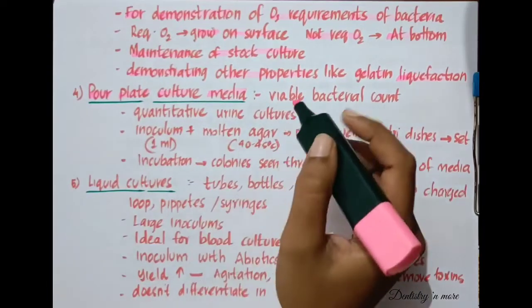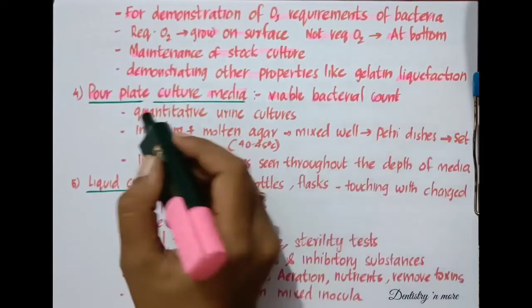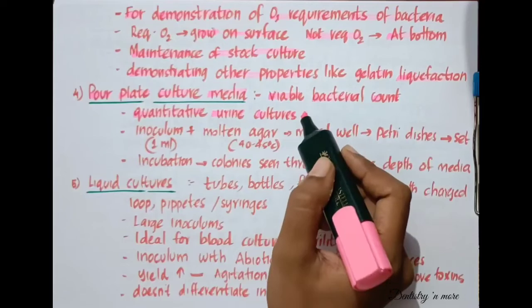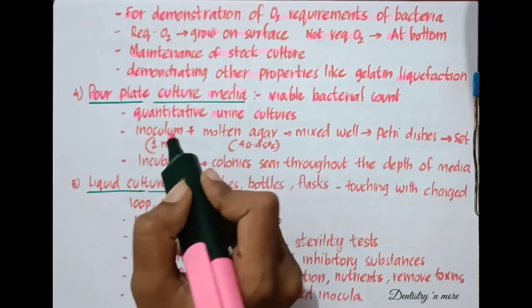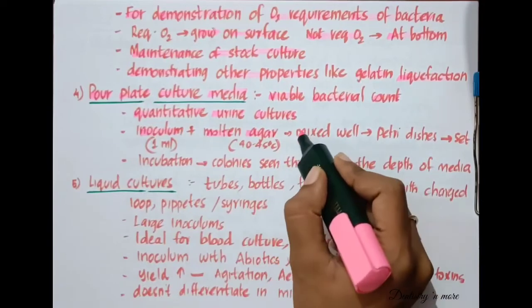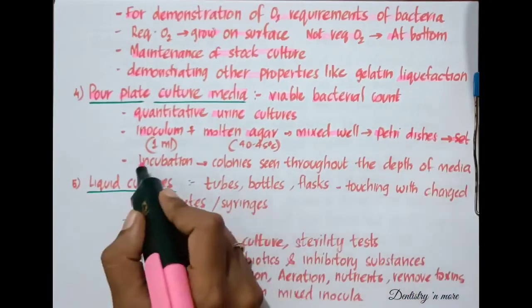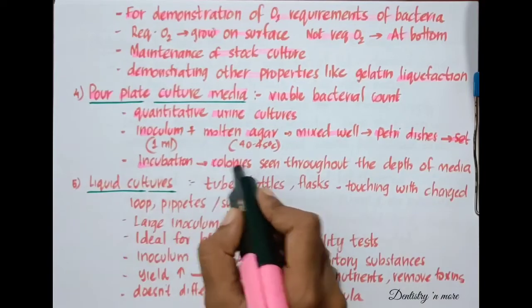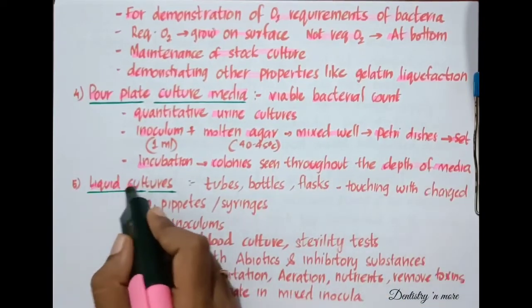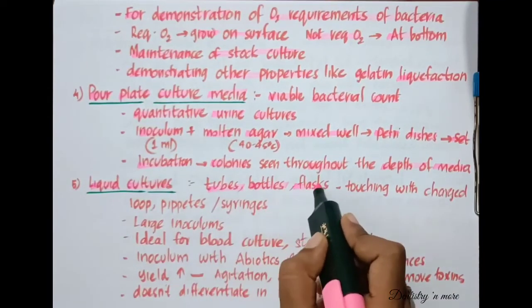The next culture method is pour plate culture. Pour plate culture gives an estimate of the viable bacterial count and is used in quantitative urine culture. Here, 1 ml of dilute inoculum is mixed with molten agar at 40 to 45 degrees Celsius, mixed well in petri dishes, and allowed to set. After incubation, we can see colonies throughout the depth of the media.